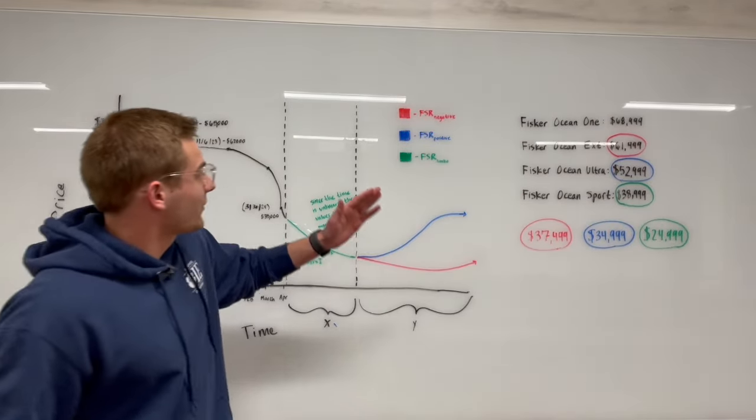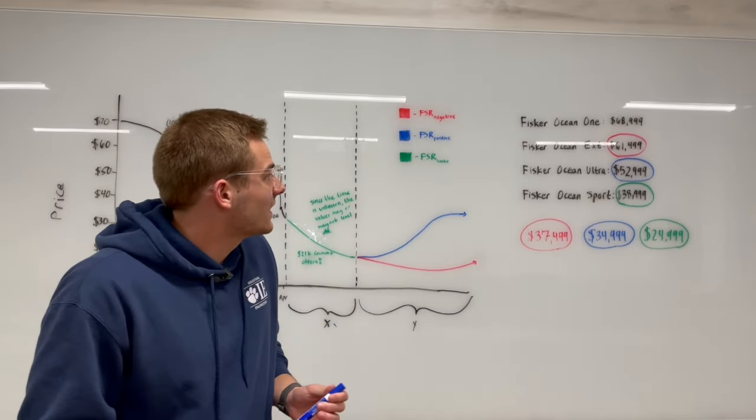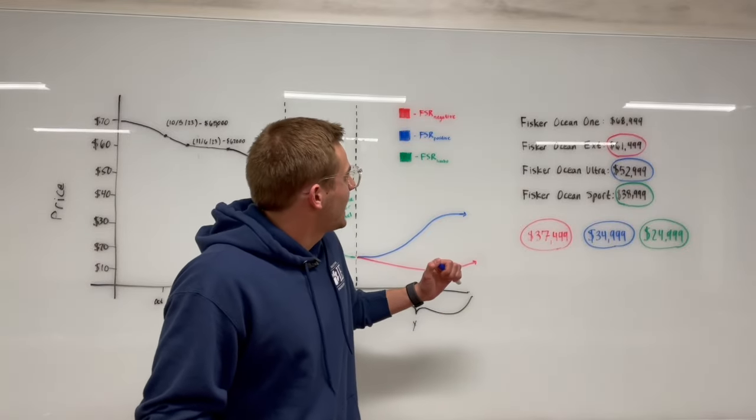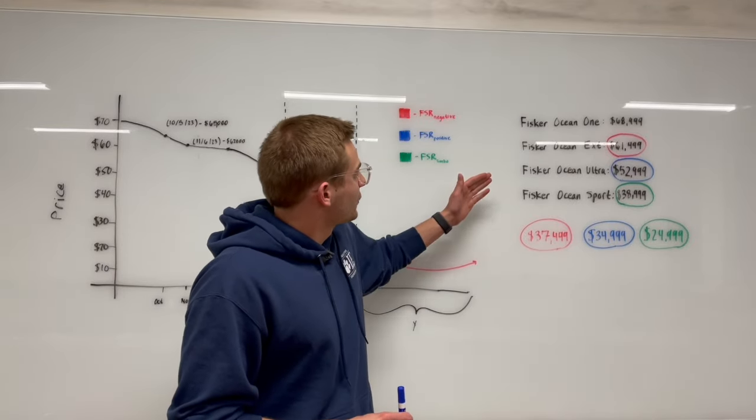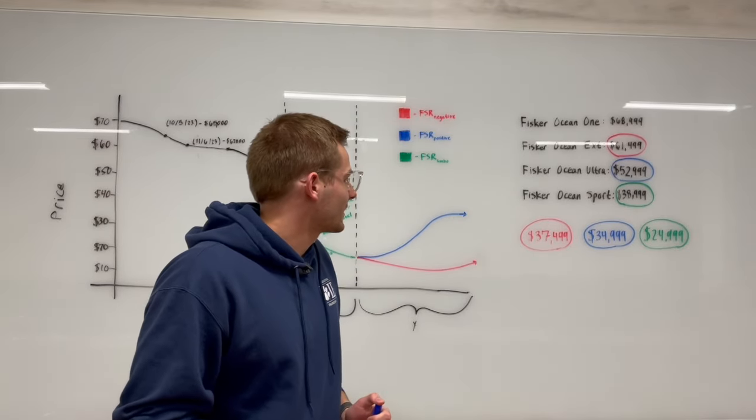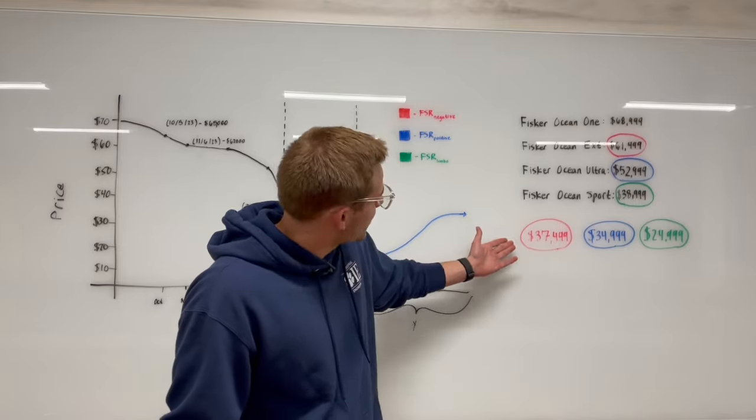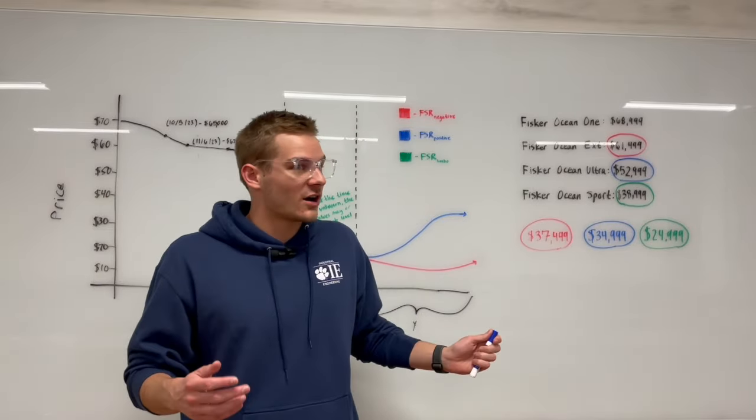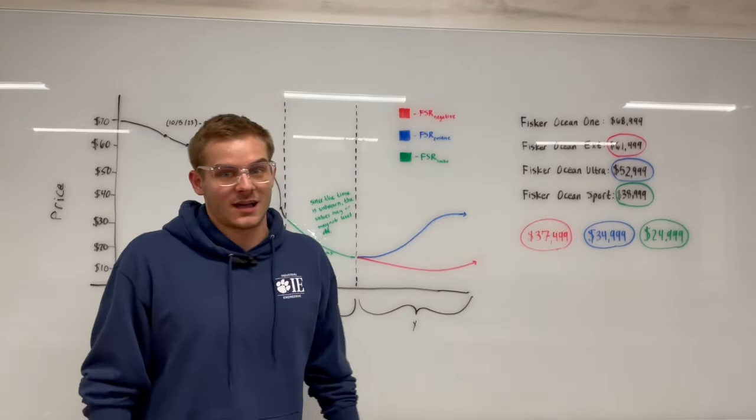As we can see here, we have the Fisker Ocean 1. Most owners I spoke with bought the Ocean 1 for about $69,000 to $70,000, which is a massive sum of money - we're talking Rivian territory. Now Fisker has slashed prices in what's likely a last-ditch effort to avoid bankruptcy. The Ocean Extreme was $61,500 new, now it's $37,500 - a massive reduction. The Ocean Ultra was $53,000, now $35,000. It makes more sense to get the Extreme because the percentage difference is much greater. The Ocean Sport is supposedly $25,000, though I can't find any in inventory.